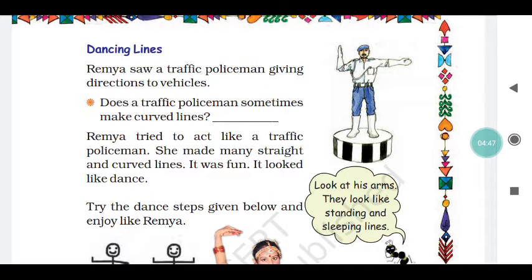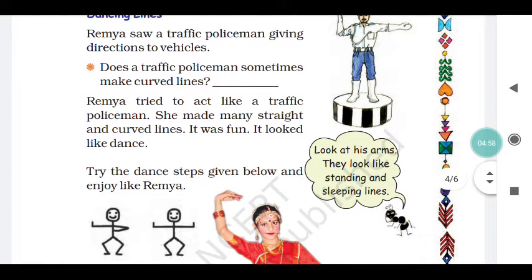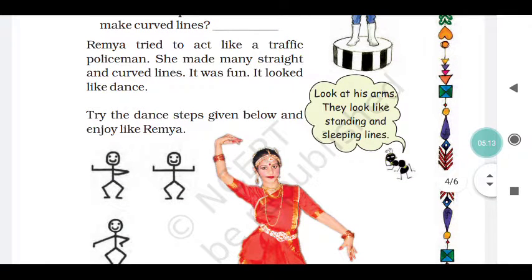Ramya saw a traffic policeman giving directions to vehicles. Does a traffic policeman sometimes make a curved line? Yes! Sometimes they make a curved line — for example, when a green signal happens, they use gestures. She made many straight and curved lines; it was fun and it looked like a dance.